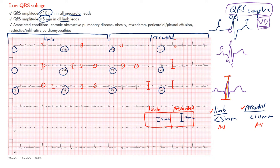What causes this? There are many causes. Chronic obstructive pulmonary disease is one — with so much air, the leads can't pick up much of the electrical signal from the heart. Obese patients can have it. Those with myxedema, or if there's a pericardial or pleural effusion, that fluid between the heart and the leads may impair the ability to record the signal.